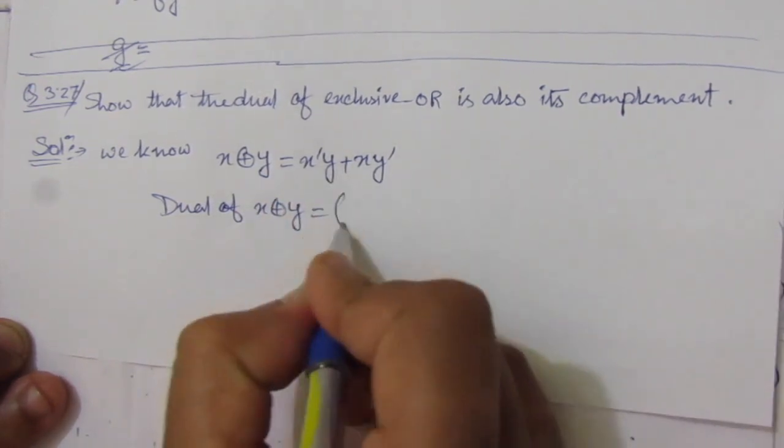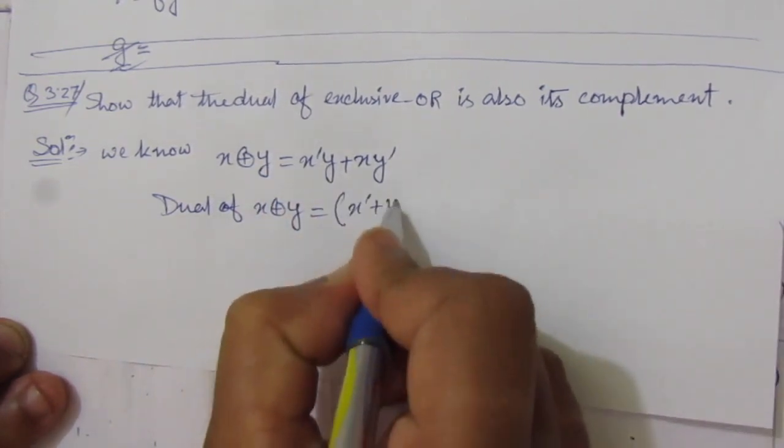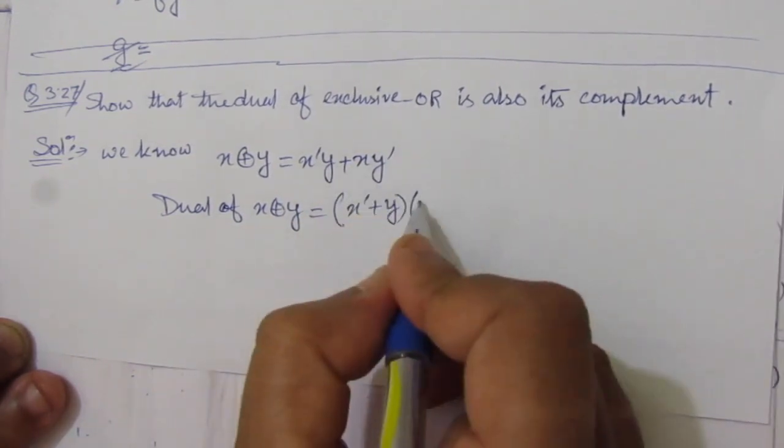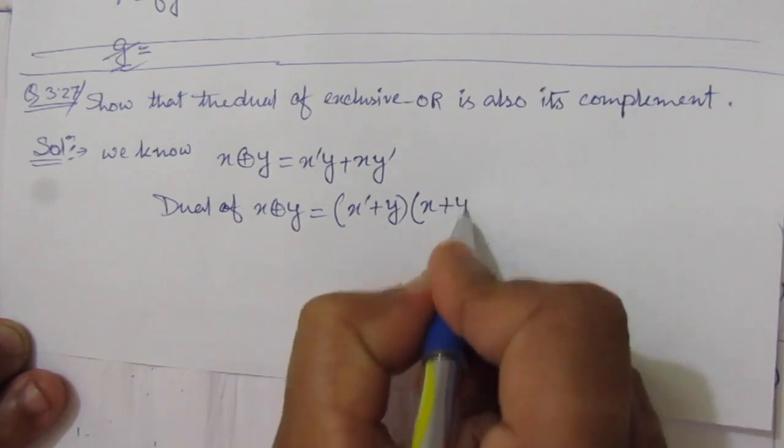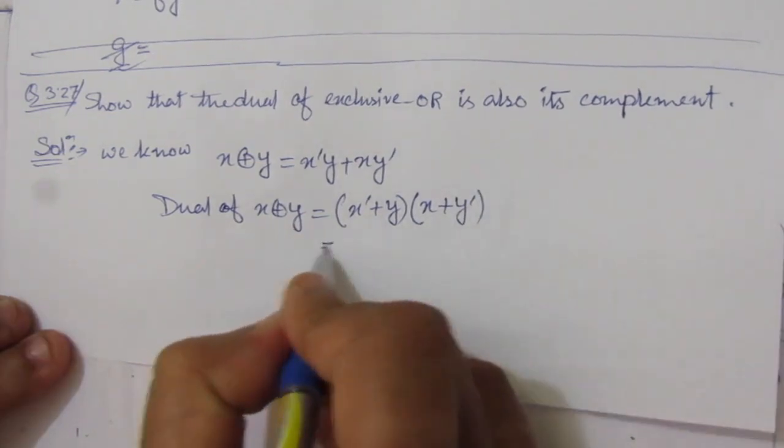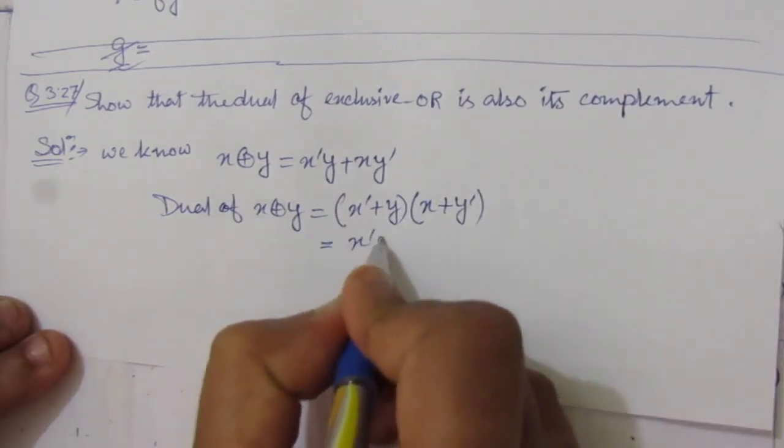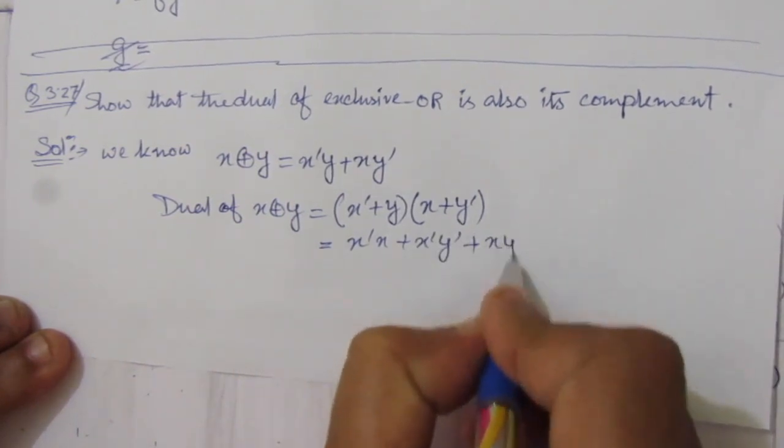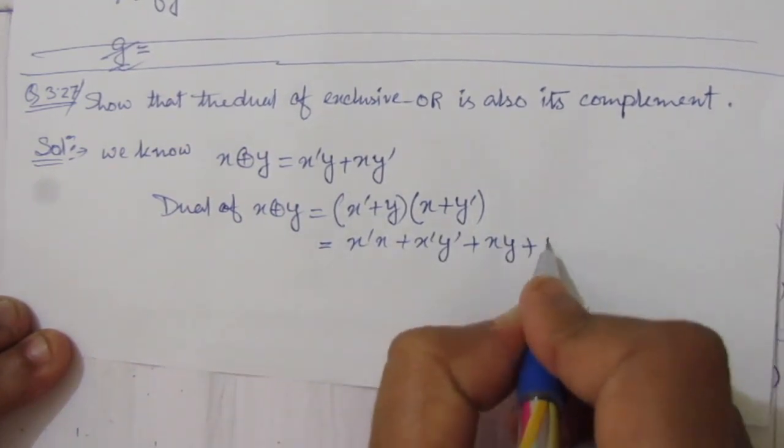Here we have multiplication, so we will write x bar plus y, and here we have addition, so we multiply it with x plus y bar. If we expand this, we will get x bar x plus x bar y bar plus xy plus y y bar.